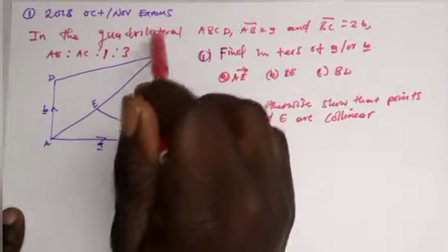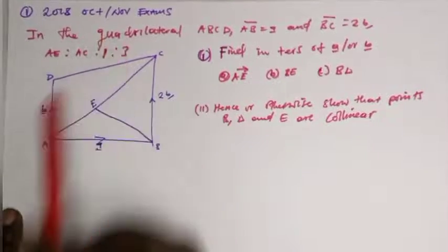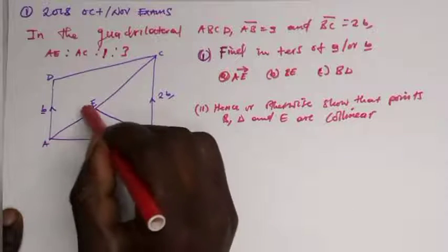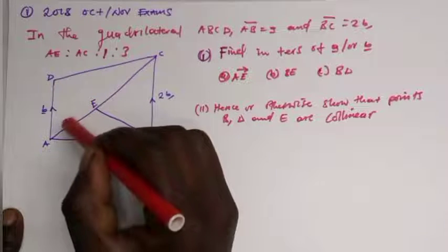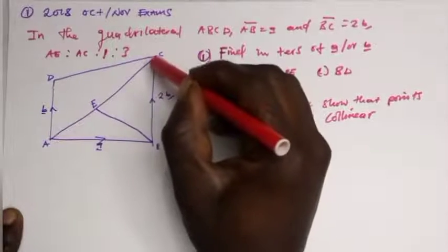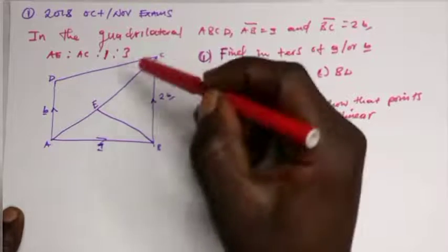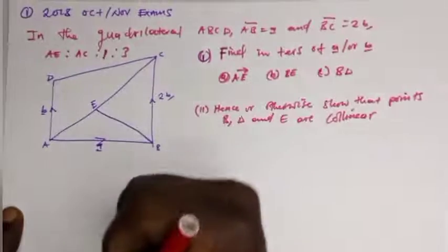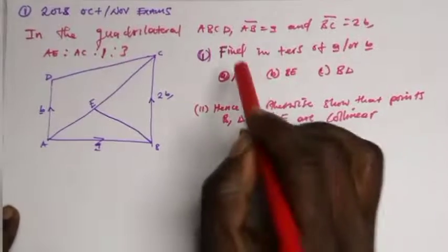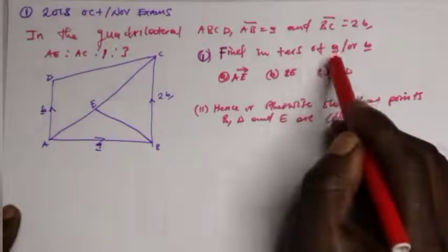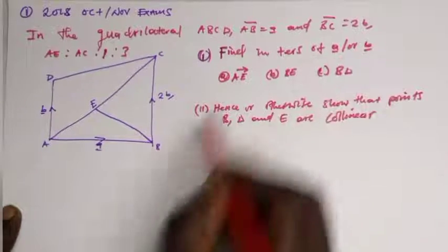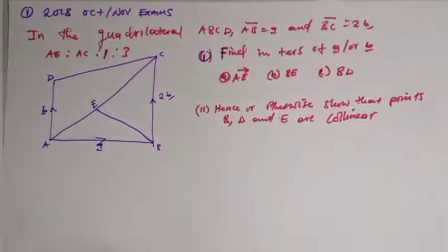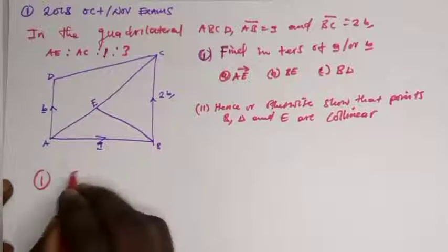The ratio AE to AC is 1 to 3 — so AE is 1 and the whole line adds up to 3. We have to find, in terms of a and b, firstly vector AE.